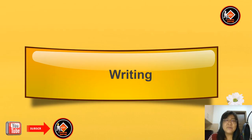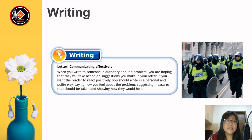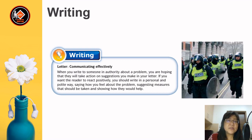Dear students, now we'll do the writing lesson. Today we are going to write a letter — communicating effectively. When you write to someone in authority about a problem, you are hoping they will take action on your suggestions. If you want the reader to react positively, you should write in a personal and polite way, saying how you feel about the problem, suggesting measures that should be taken, and showing how they would help.